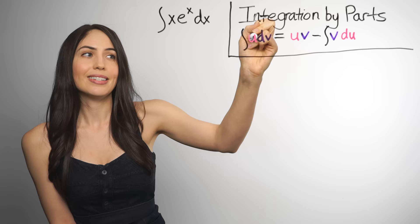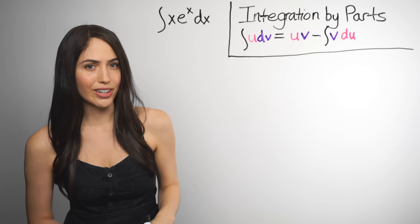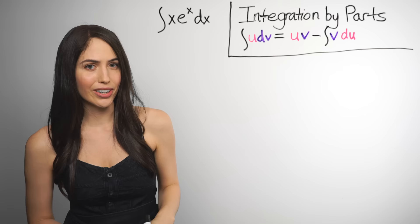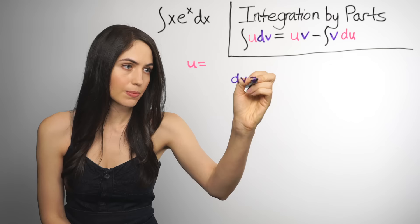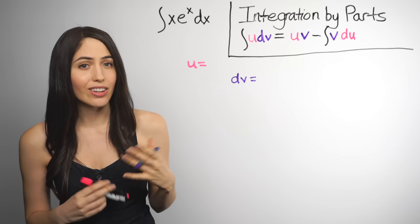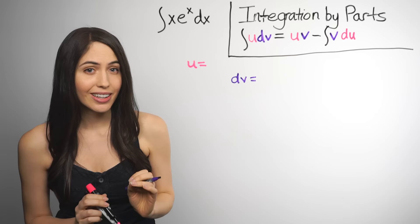You have to choose what's u and what's dv yourself and carefully in order for it to work. So choosing u and dv can be the most confusing part, the hardest part, I think. But don't worry, I'm going to show you how to do it.